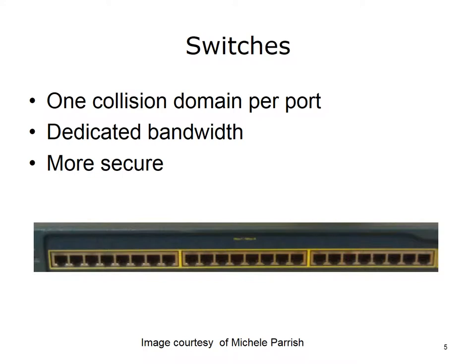With switches, each device has its own connection to a port on the switch. Each port is its own collision domain, so a switch with 4 active ports has 4 collision domains. If there is 10 megabits per second coming into the switch, then each port has 10 megabits per second. Switches have a switching or MAC table that associates the MAC address of the device connected to the port with the port number. If a packet is destined for a particular MAC address, that packet will only be sent to the port associated with that MAC. This is a more secure form of data transmission, not susceptible to the same packet sniffing issue as hubs.